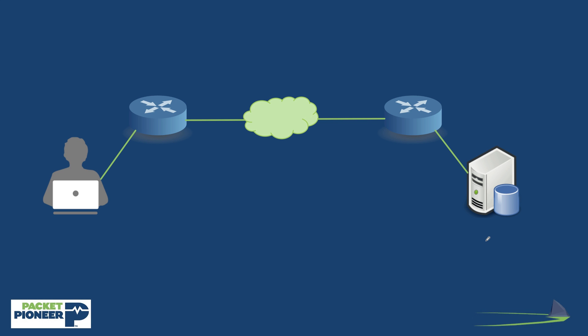So now we have 150 milliseconds of time between the client and the server. Now the packet train that comes out from the server is going to have a whole lot more packets in it — instead of just three or four, it could have hundreds out on the wire. As long as we have a healthy TCP receive window on the client and a healthy congestion window or send window on the server, we can have a lot of packets in this packet train between these two endpoints.